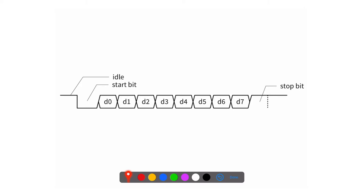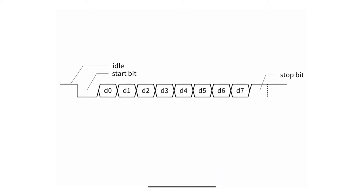The receiver and transmitter agree upon a baud rate, with common standard baud rates — the most common being 9600. Now that we know how the protocol generally works, how does it physically work? How does the receiver know when to read the data? There's actually an oversampling scheme that happens.